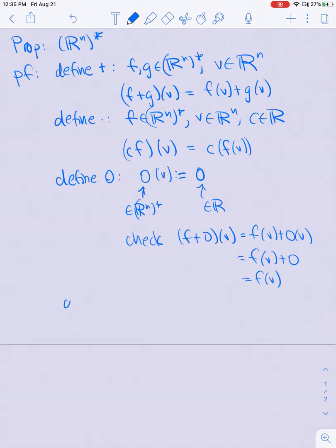And then finally, I need to define negation. And similarly, this is pretty clear what I should do. The negative of F should send every vector V to the negative of F of V.